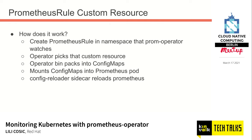When you create a PrometheusRule with alerting or recording rules, the Prometheus Operator — depending on which namespace it watches — picks up that custom resource and bin-packs all the specified rules into one or multiple ConfigMaps, depending on their size. It then mounts those ConfigMaps into the Prometheus pod, and the config reloader sidecar watches for changes and reloads Prometheus. This is really important to know when debugging why a PrometheusRule or ServiceMonitor isn't being picked up.